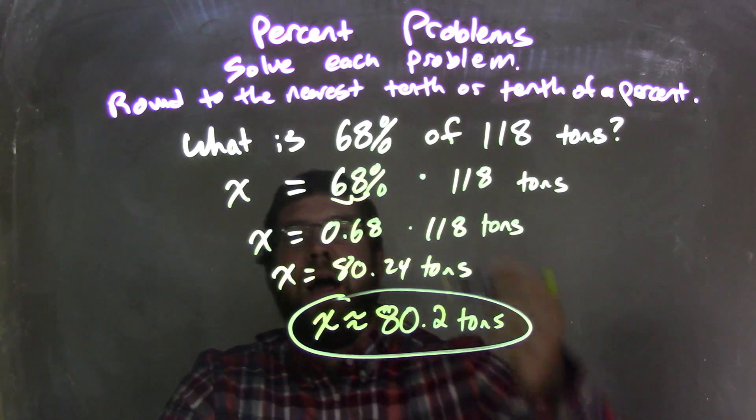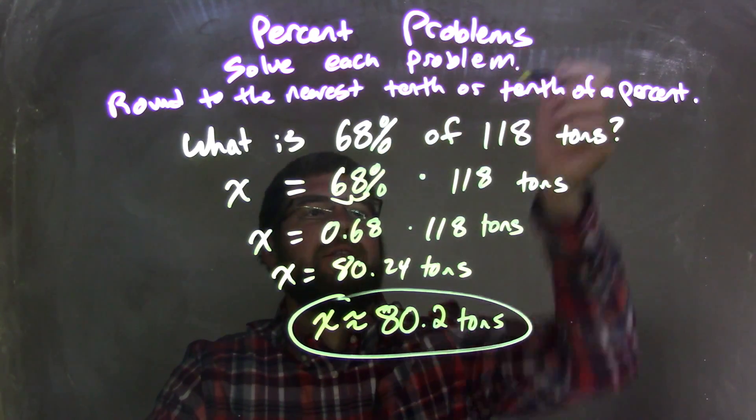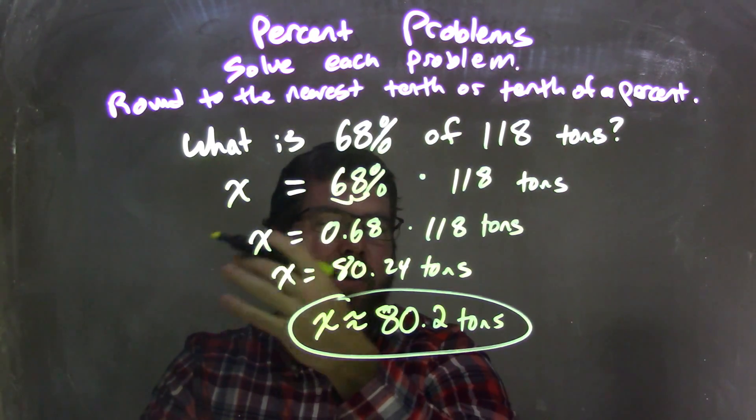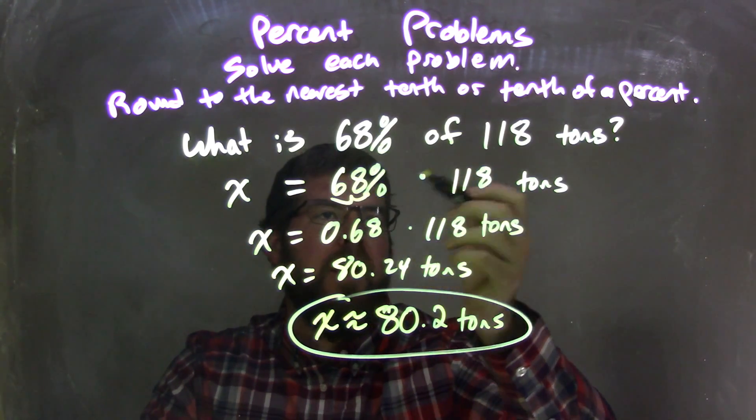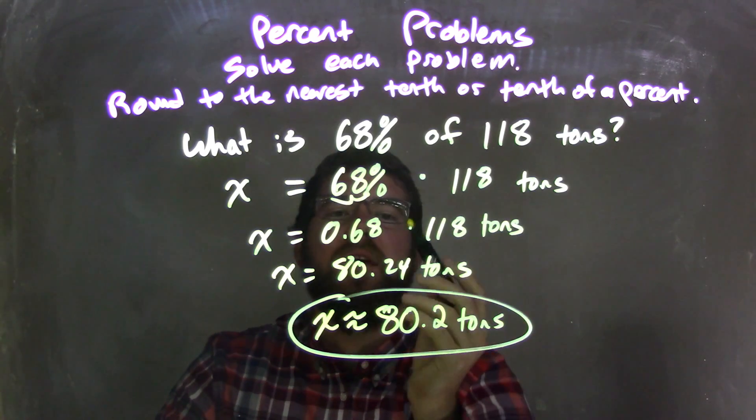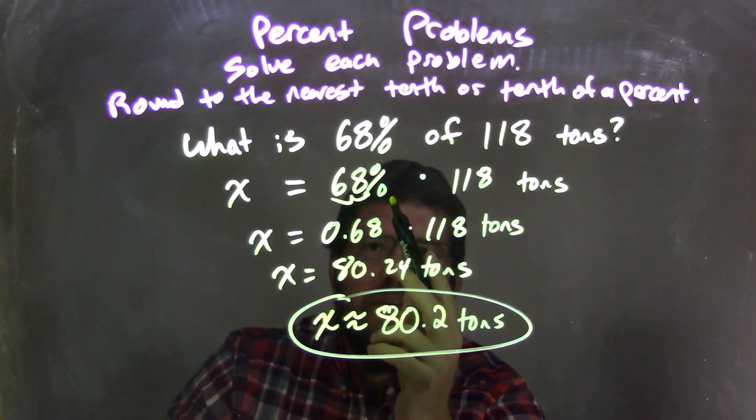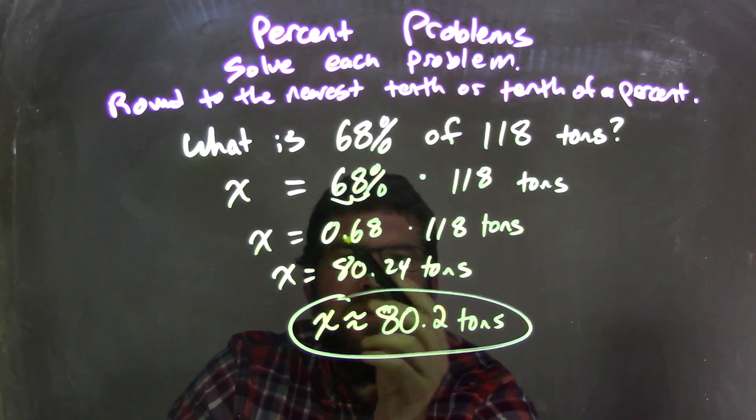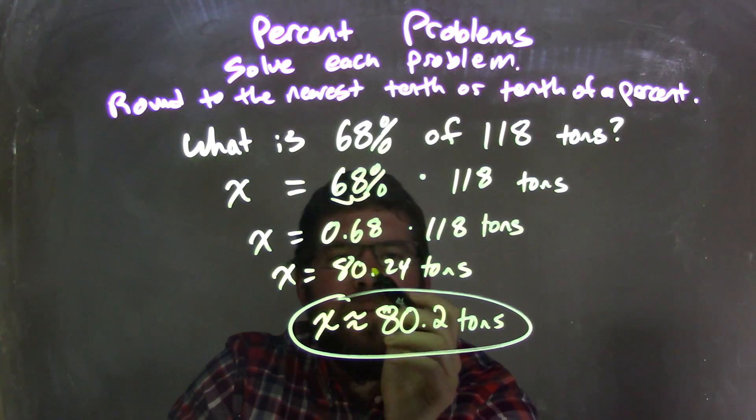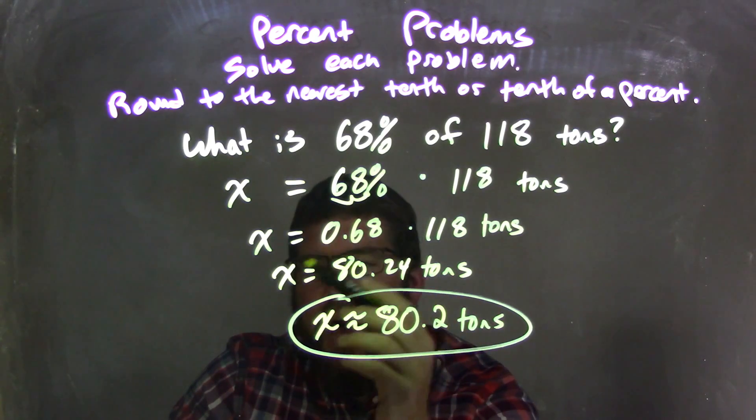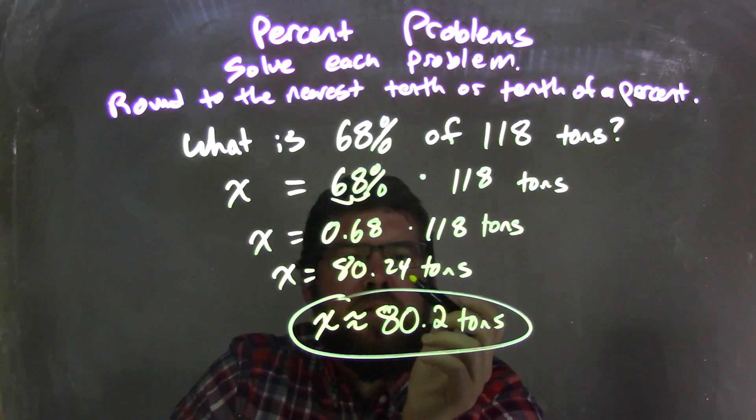So as a recap, we're asked the question, what is 68% of 118 tons? We write this as an equation. What, or X, equals 68% of 118 tons. I then convert the percent to a decimal, so 68% is 0.68 as a decimal. Multiply that by 118 tons, leaving me with 80.24 tons. But now I needed to round.